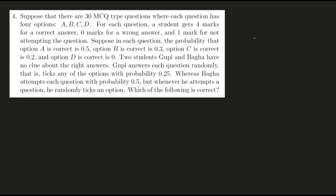Question four — this may seem like a long complicated question, and it actually is, but it's not really that difficult. Let's start by taking a random variable X for the total score. I'm going to break this random variable into 30 other random variables, where each Xi is the score for a particular question. A thing to note here is that all Xi's are identically and independently distributed, meaning my score in one question is independent of my score in another question.